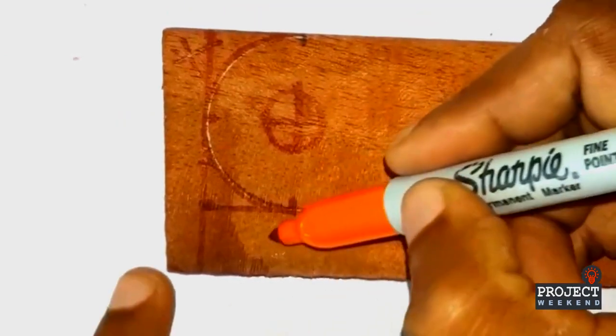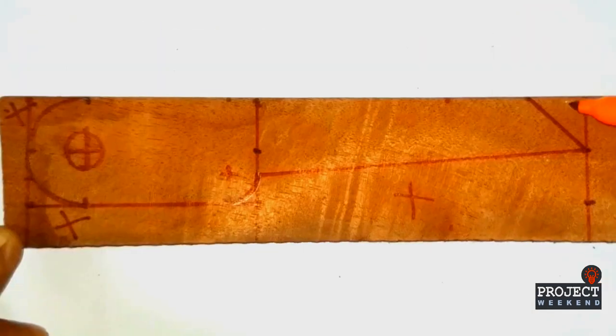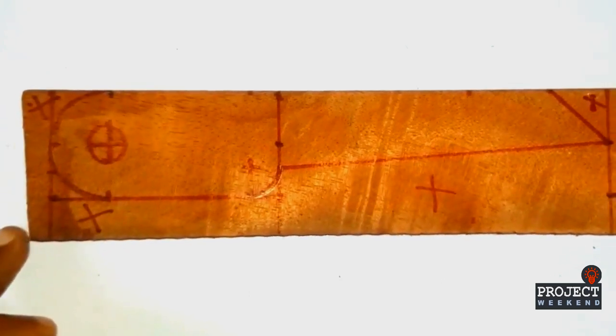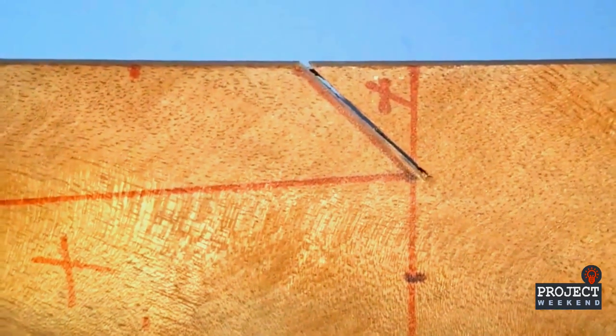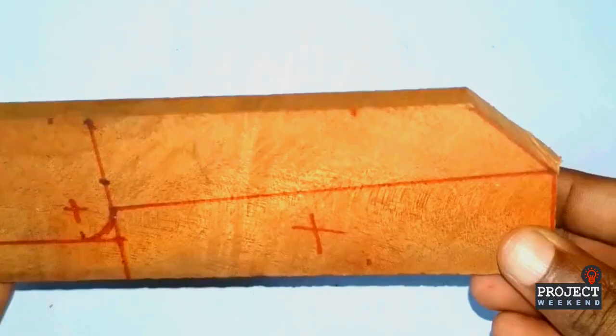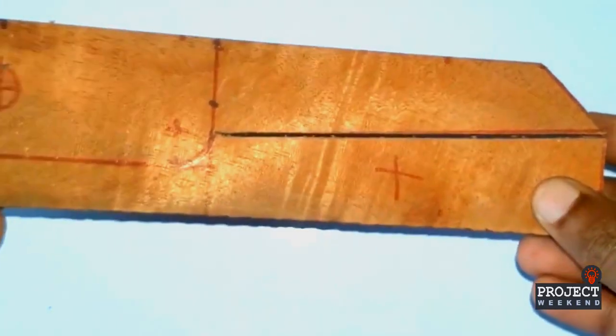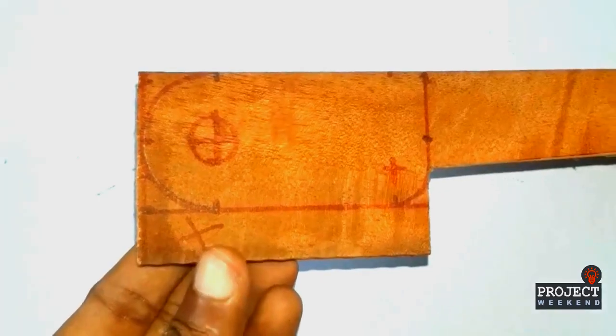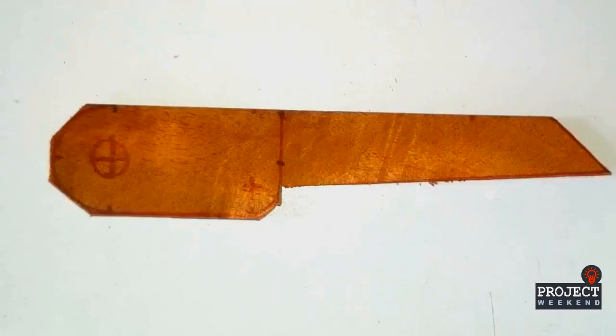Now we are going to cut off these marking parts from our wood piece. We have cut off all the unnecessary parts. Now we use sandpapers to smoothing edges and get a better shape.